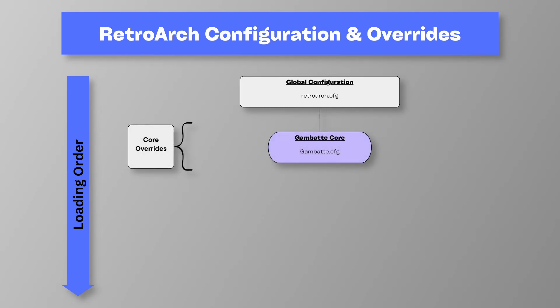On the next level comes the first override configuration: core overrides. If you're not familiar with the RetroArch term 'core', it basically just means emulator. I'm going to be using the Gambatte core as an example, which is a popular Game Boy and Game Boy Color emulator. All overrides inherit the settings from the configurations higher up in the hierarchy structure. So in this example, the settings from RetroArch.cfg are passed down to the Gambatte.cfg file. However, any changes made and saved in the Gambatte.cfg will override those settings from RetroArch.cfg, and as the name suggests, it will only apply to the games that use this core.